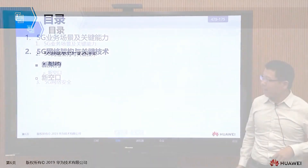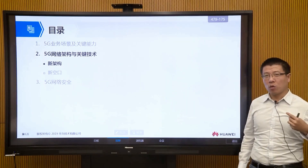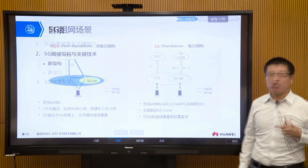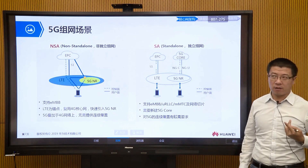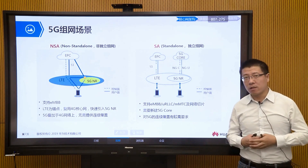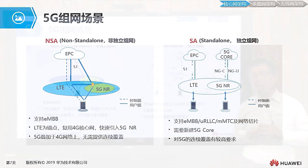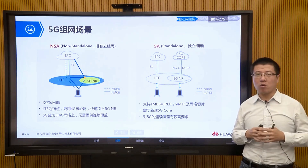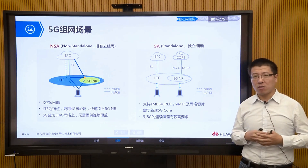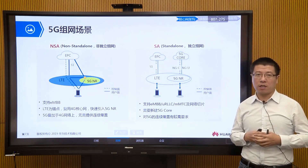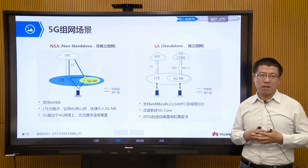5G is enabled through a new network architecture and new air interface technology to enable new key capabilities. The first is our network architecture. We want to achieve key capabilities such as low latency. On our existing network architecture, they might encounter some difficulties, but we can achieve it through new network architectures more easily, including implementing slicing, which also requires updating our existing network architecture.